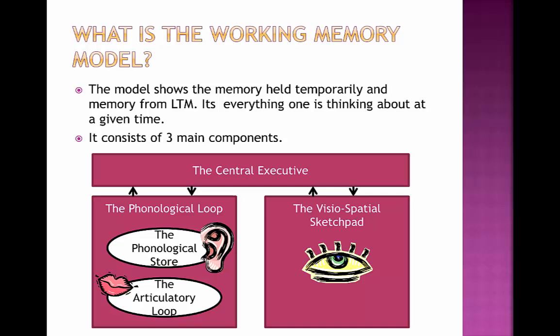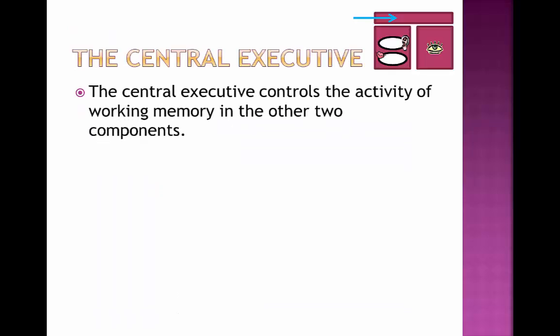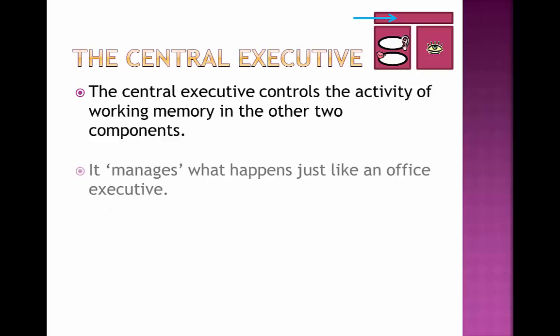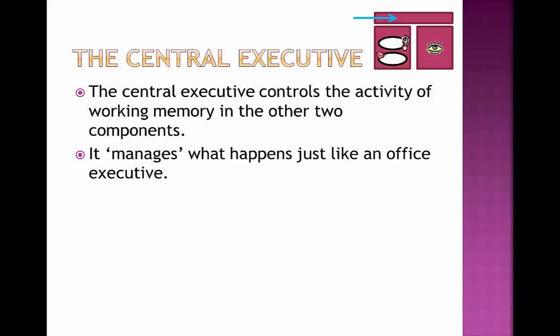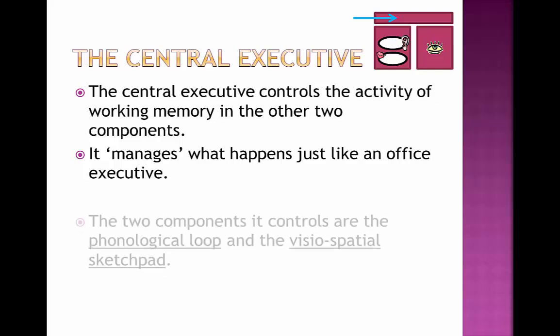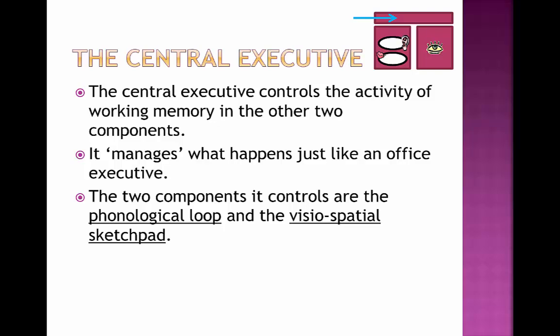We'll begin by looking at the rectangular box at the top called the central executive. The central executive controls the activity of working memory and the two other components — it manages what happens, just like an office executive. The other two components are like slaves to what the central executive wants; every time the central executive issues a command, the other two carry it out. Those two components are called the phonological loop and the visuospatial sketchpad.